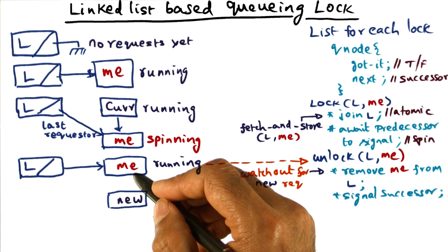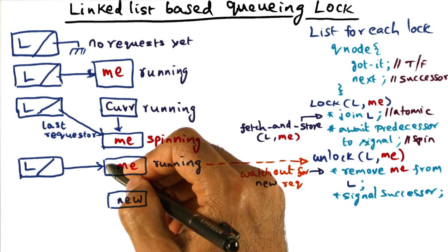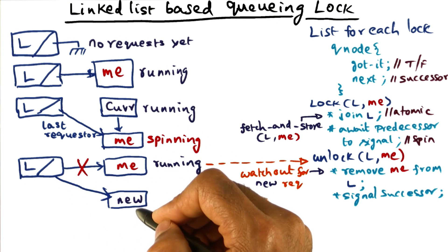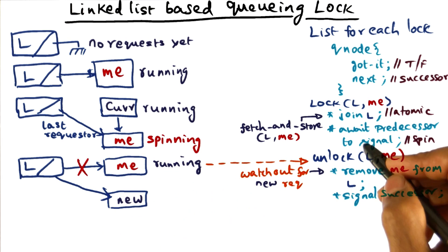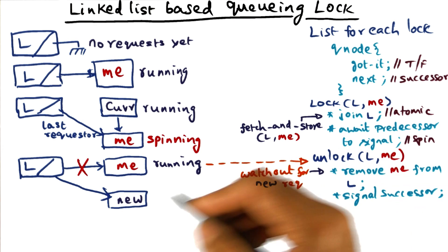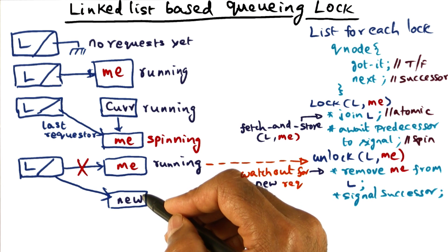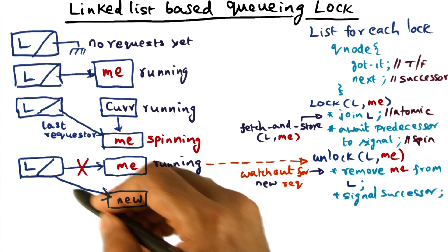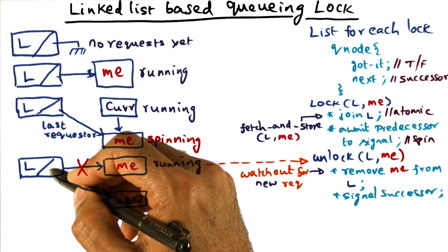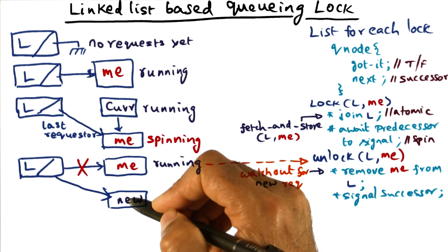then you know that this link is no longer going to be pointing to me, but it is going to be pointing to him. And that's what this fetch and store would have done, is to give this new guy my coordinates, and it has also set the linked list to point to him as the last requester.